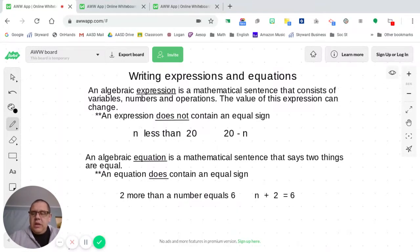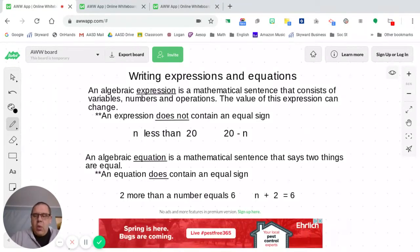All right. So now let's take a look at an algebraic equation. An algebraic equation is a mathematical sentence that says two things are equal. And so since they're equal, an equation does contain an equal sign.